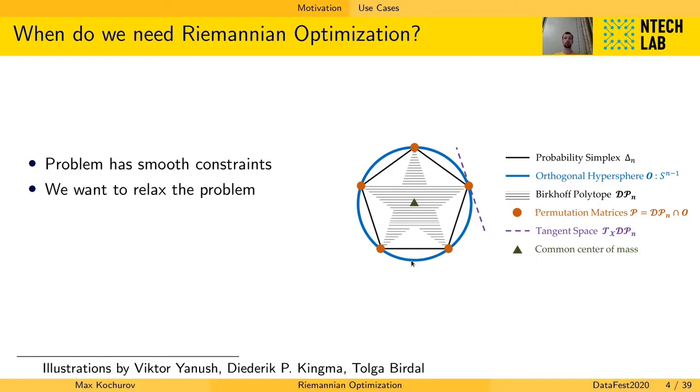And all these examples can be unified in terms of Riemannian optimization. The sphere, the orthogonal matrix and the Birkhoff polytope that is this doubly stochastic matrix manifold and many others. So you can't actually enumerate them but they all have smooth constraints and it's very useful to apply proper methods that take it into account.